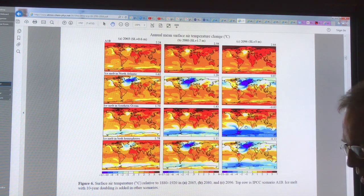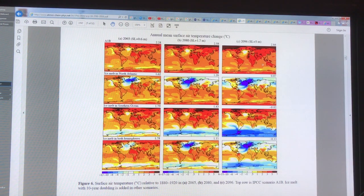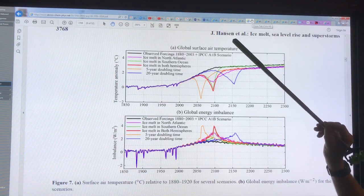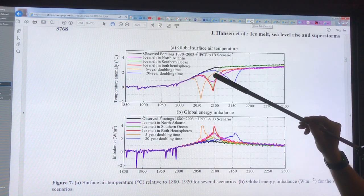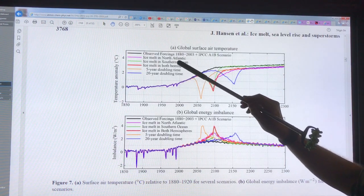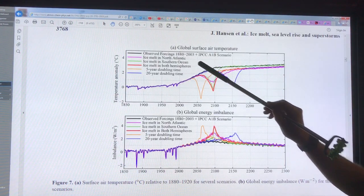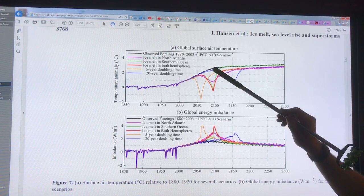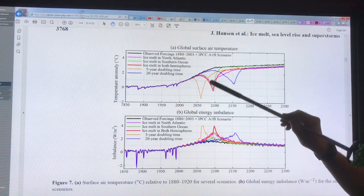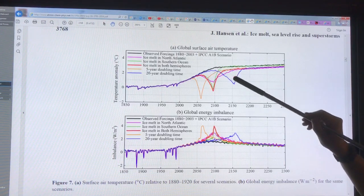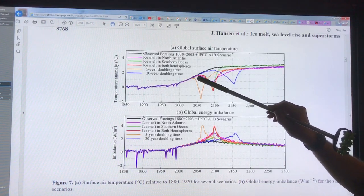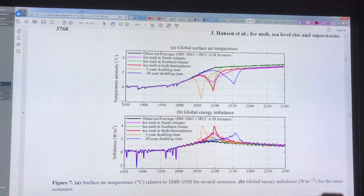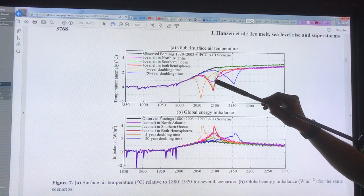This is showing global surface air temperature in different models. The purple line is ice melt in the North Atlantic, the green line is in the southern ocean, the red is ice melt in both hemispheres. We have a 5-year doubling time here and a 20-year doubling time here and here, and this will be a 10-year doubling time. Keep in mind we're at about a 7 year doubling right now.